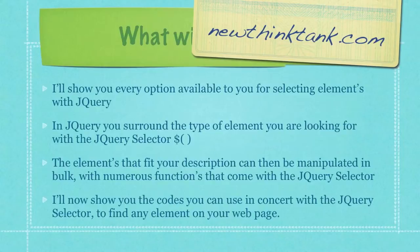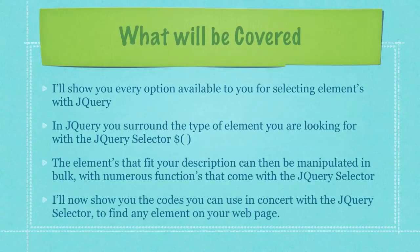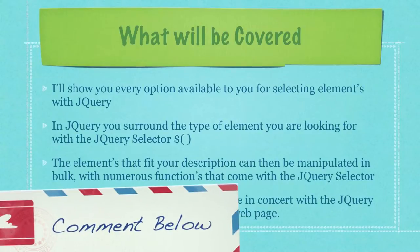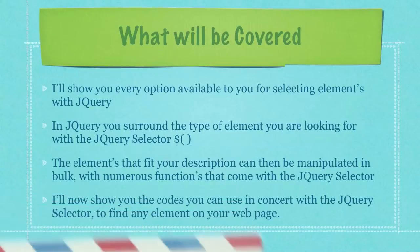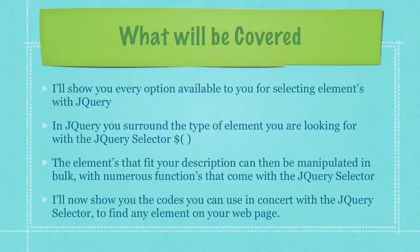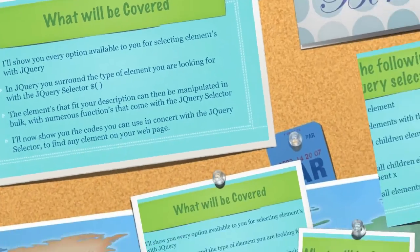In jQuery you surround the type of element you are looking for with the jQuery selector, which is represented by a dollar sign followed by both an opening and a closing bracket. The elements that fit your description can then be manipulated in bulk with numerous functions that come with the jQuery selector. I'll now show you the codes you can use in concert with the jQuery selector to find any element on your webpage.